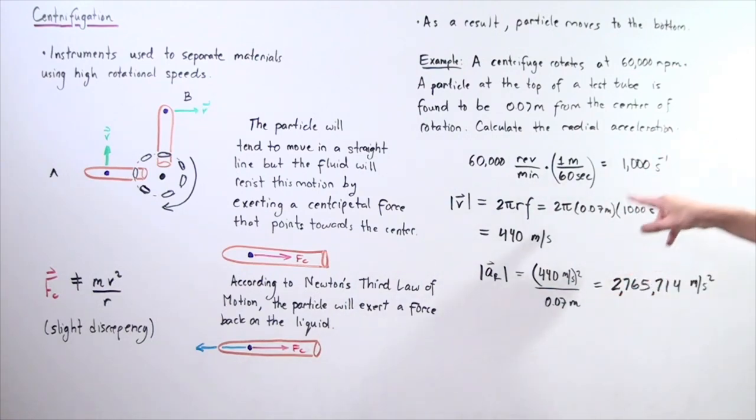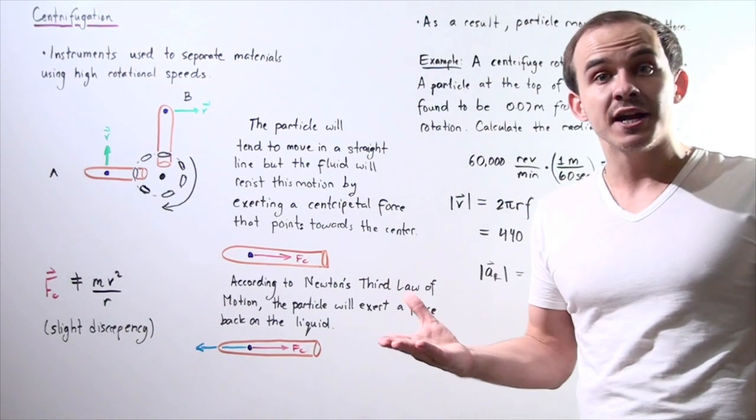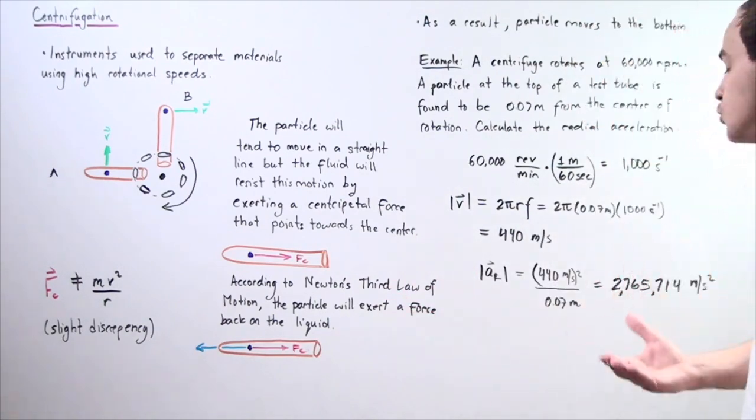So this is our radial acceleration and we can see that it's a very high value, much higher than the acceleration due to gravity.